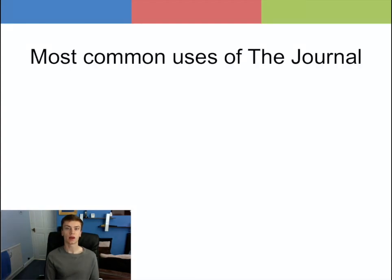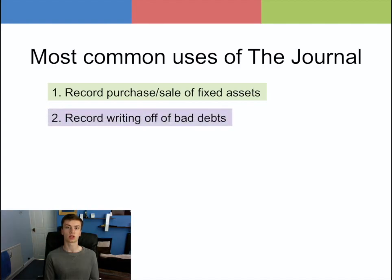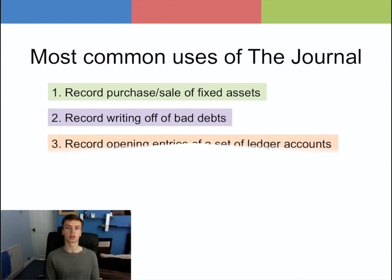Here are the five main and most common uses of the journal. The first use is to record the purchase and sale of fixed assets on credit. The second use is to record the writing off of bad debts. The next use is to record opening entries of a set of ledger accounts.